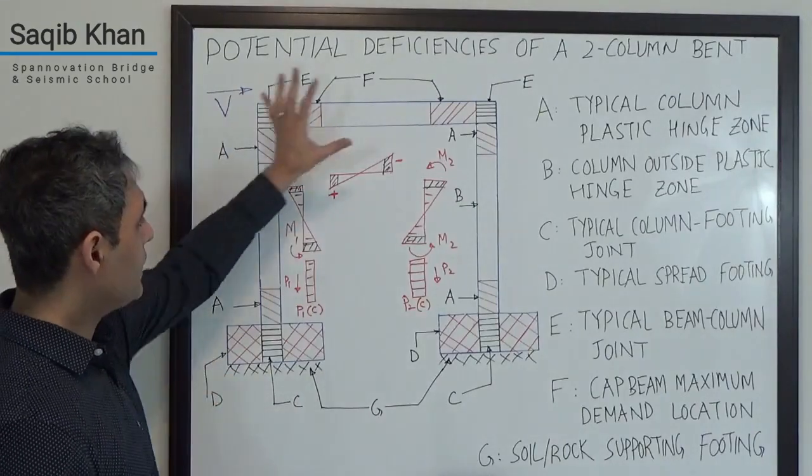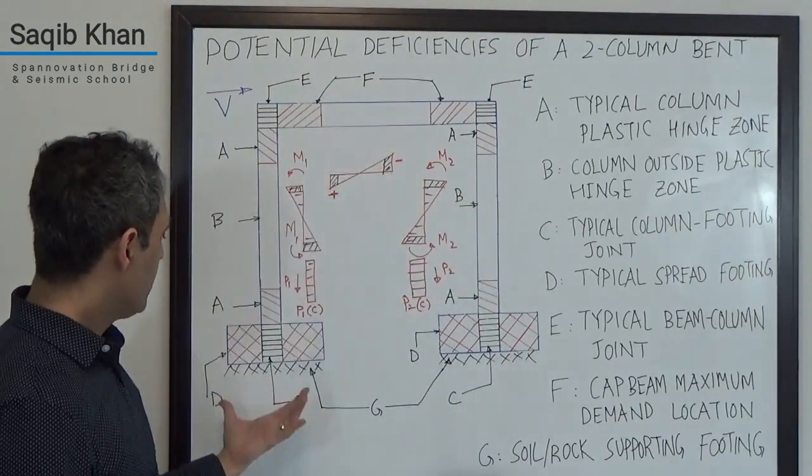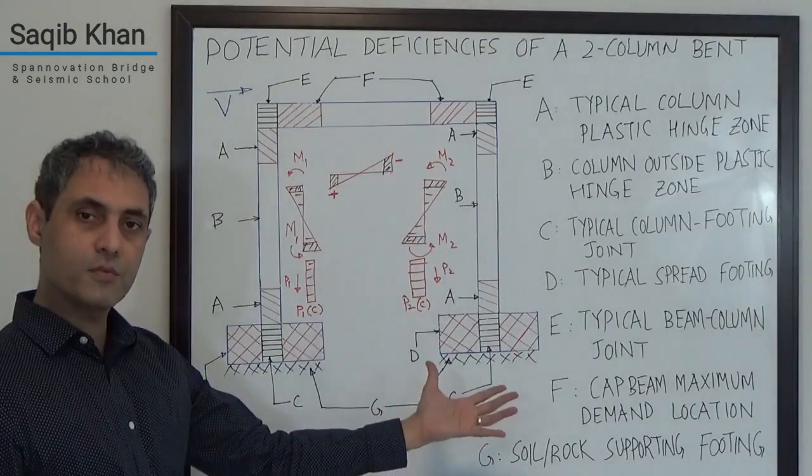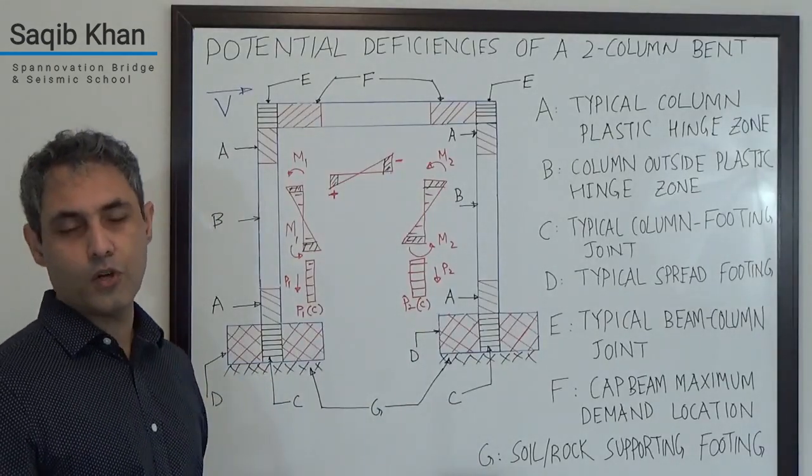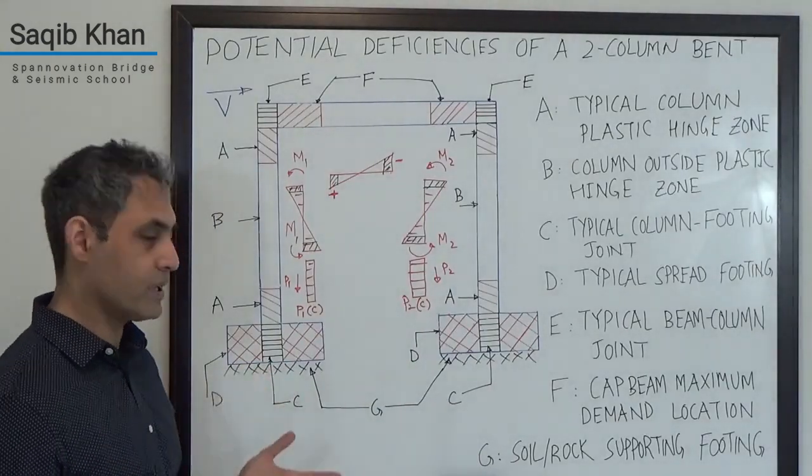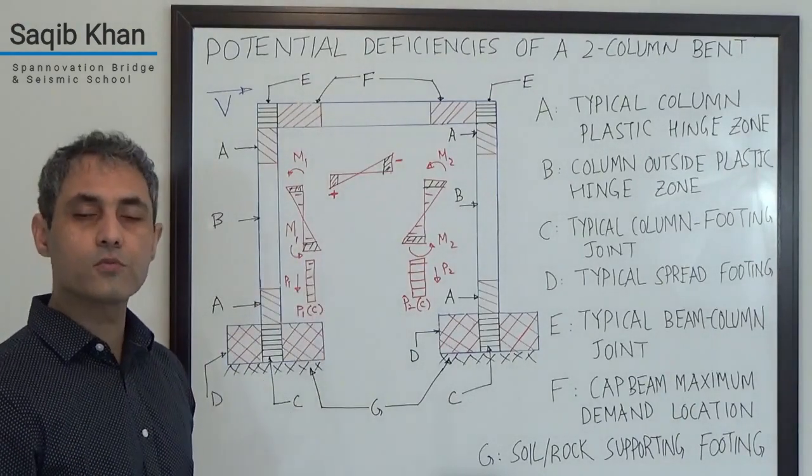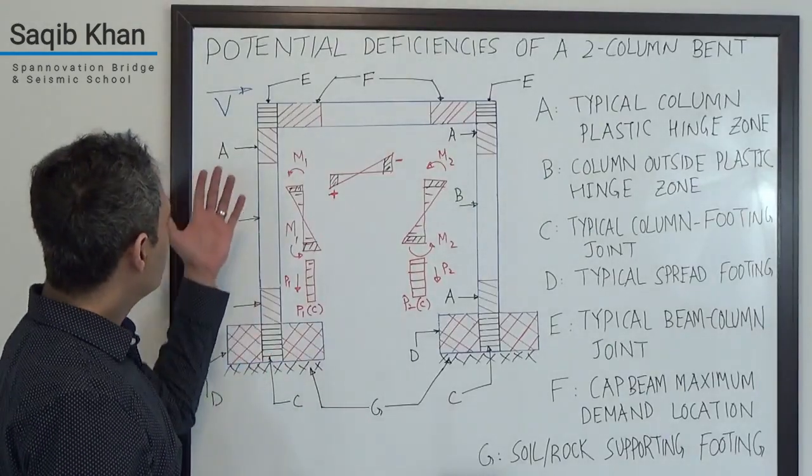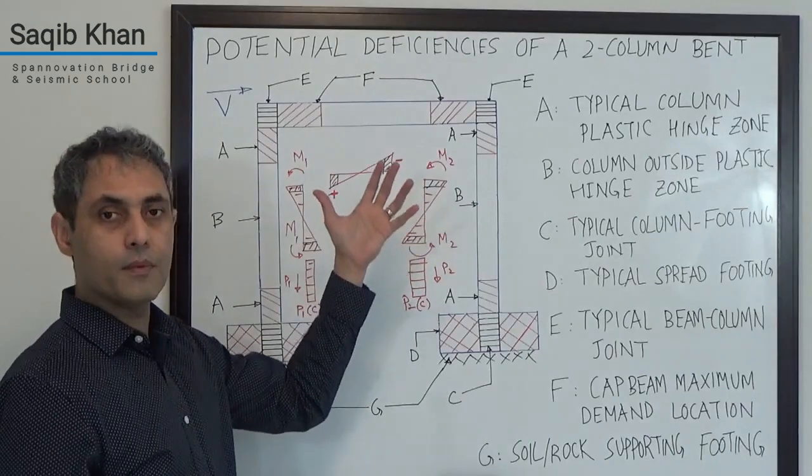What I've drawn here is just a typical bridge bent with two columns and a cap beam, and I've drawn two spread footings, individual spread footings for each column. Of course you could have soils that are not amenable to spread footings and then you would have pile foundations, but the overall thought process would remain the same. I have labeled a few zones and I will speak to you about them individually.